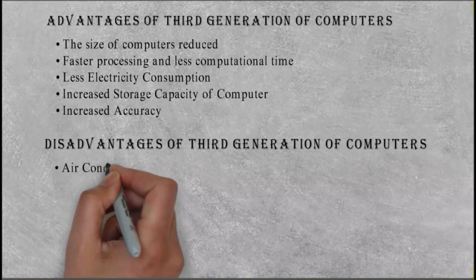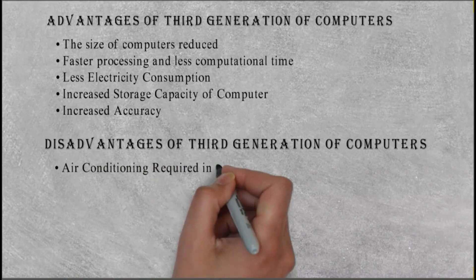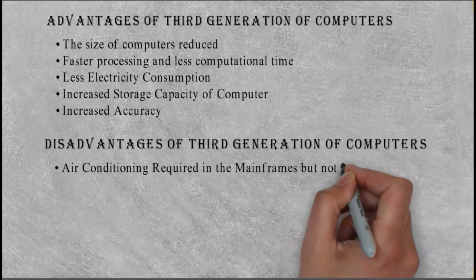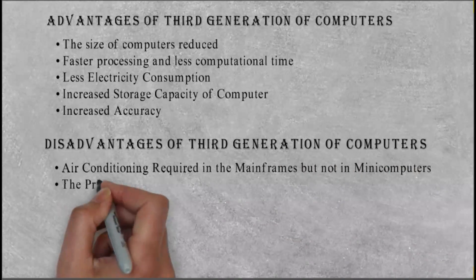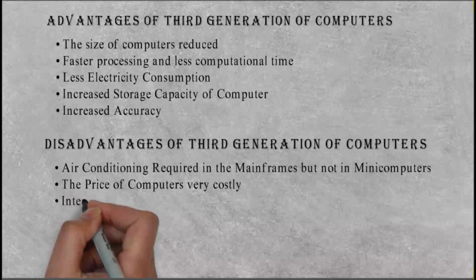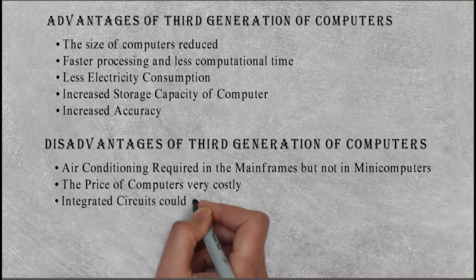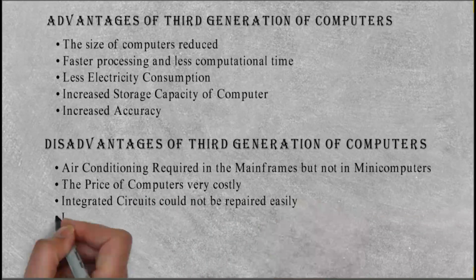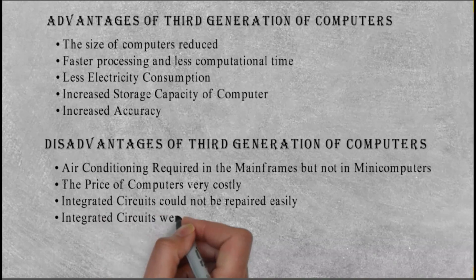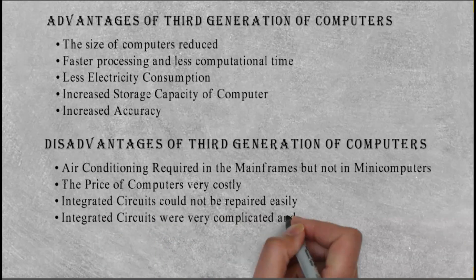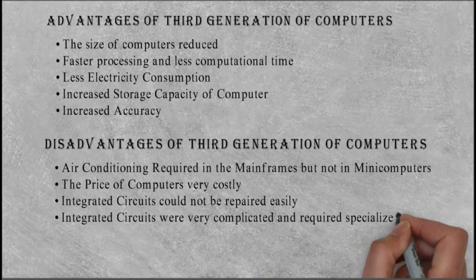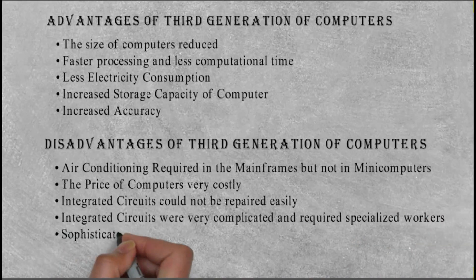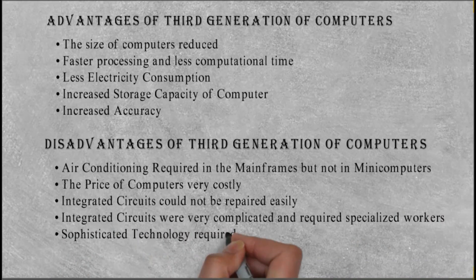Disadvantages of third generation of computers: Air conditioning required in the mainframes, but not in many computers. The price of computers very costly. Integrated circuits could not be repaired easily. Integrated circuits were very complicated and required specialized workers. Sophisticated technology required to manufacture integrated circuits.